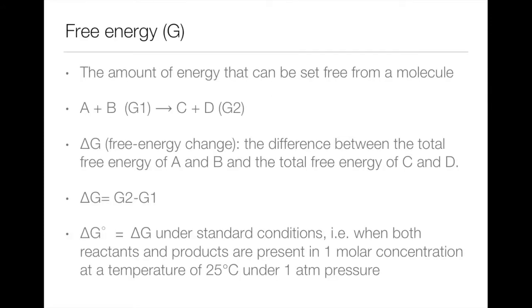The amount of energy that can be set free from a molecule is known as its free energy, conventionally designated as G. In a hypothetical reaction, if the reactants A and B produce products C and D, then the difference between the total free energy of A and B (G1) and the total free energy of C and D (G2) is called the free energy change and it is designated as delta G (ΔG).